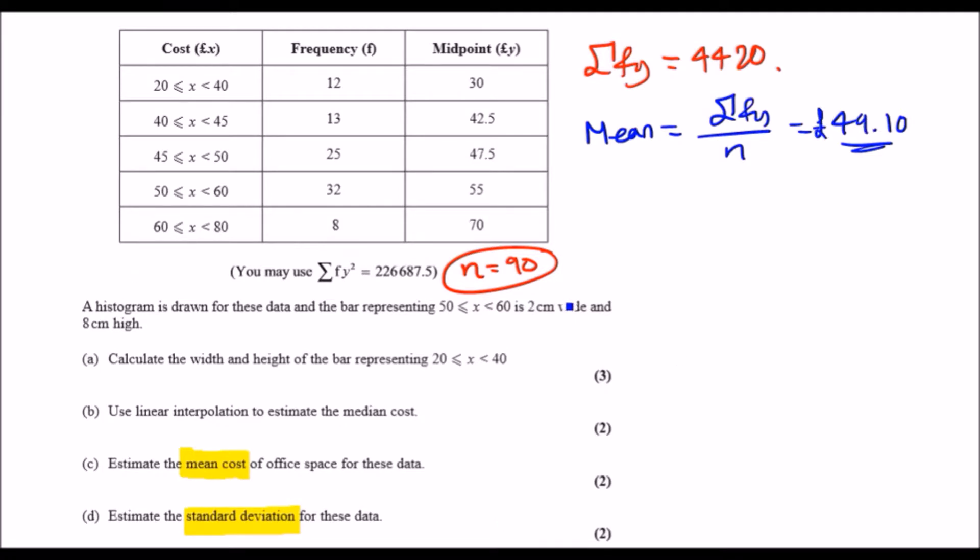That's the mean cost, actually. You know we should put in pounds, so the mean cost is £49.10. As for the standard deviation, well I usually use this relationship. I always use the variance relationship, that is the mean.